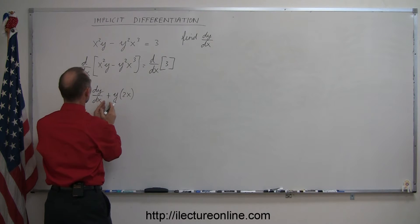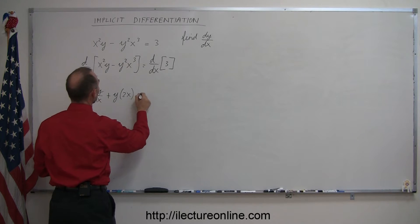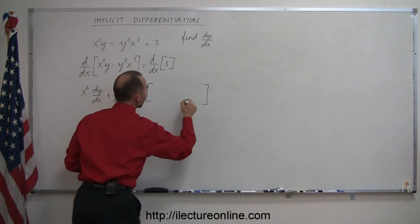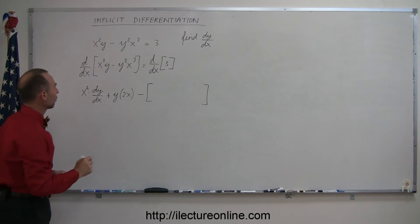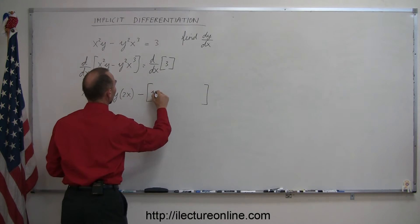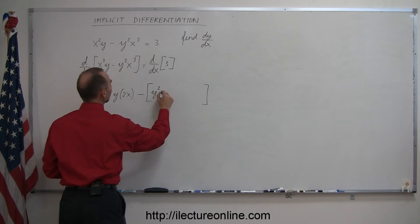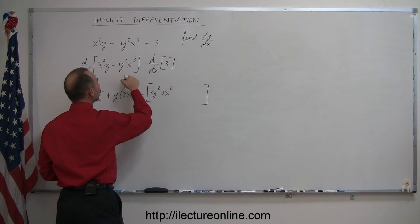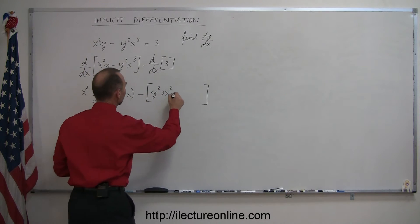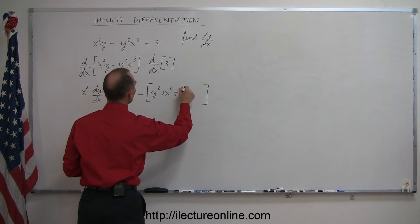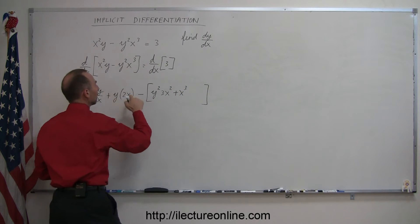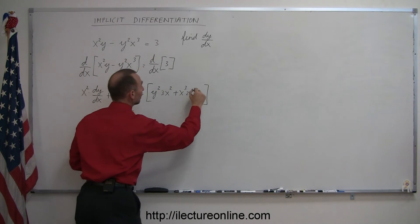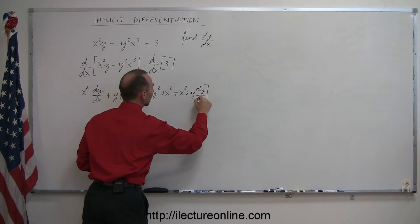So we have the first times the derivative of the second, plus the second times the derivative of the first, minus the derivative of this product — and I'm going to use brackets here. We take the first, which is y squared, times the derivative of the second, which is 3x squared. Then plus the second, x cubed, times the derivative of y squared, which is 2y times the derivative of y with respect to x, which is dy/dx. That's where this dy/dx comes from.